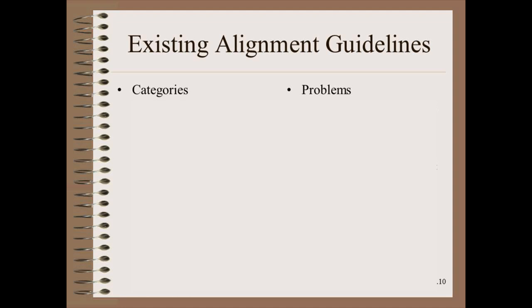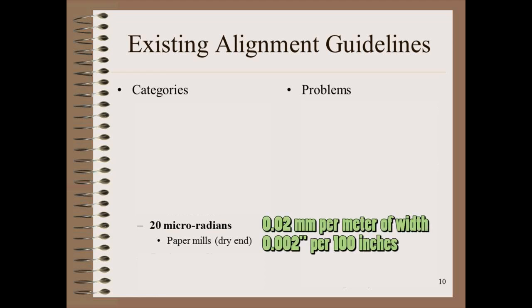There are three common alignment guidelines in use in the web handling industries. The tightest is found in the paper industry, which specifies something like 20 micro-radians at the dry end of the machine and in the winders. 20 micro-radians is 0.02 millimeters per meter of width, or in U.S. units, 2 thousandths of an inch per 100 inches of width. To achieve this level of accuracy, measurements must be even more accurate. The optical tooling used to measure roller positions is on the order of 5 micro-radians.